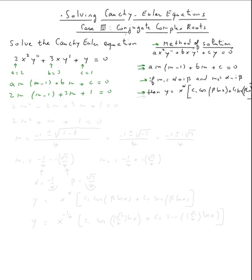Distributing: 2m times m is 2m squared, minus 2m times one is 2m, plus 3m plus one equals zero. So 2m squared minus 2m plus 3m is m, plus one equals zero.